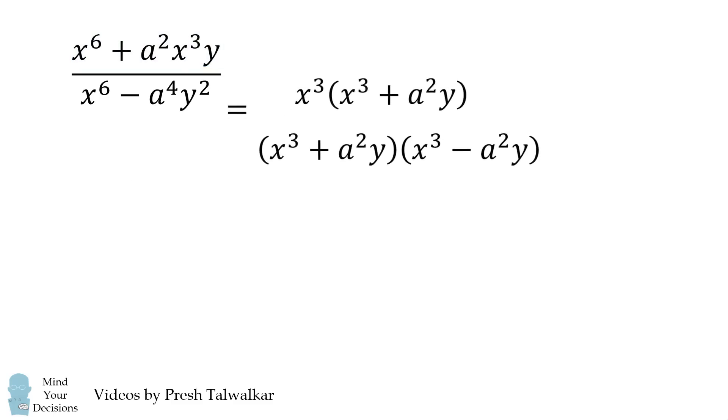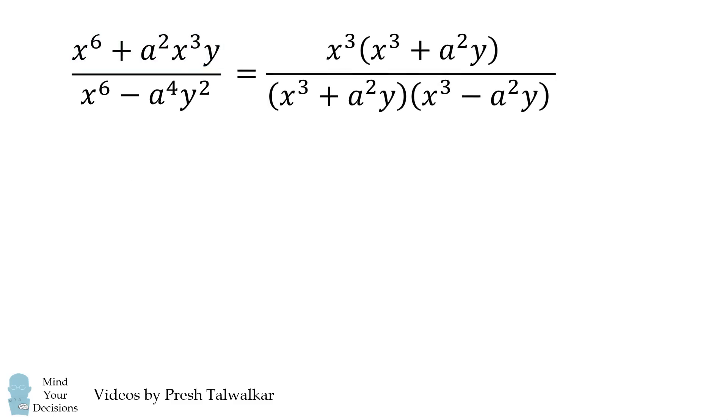We now take the numerator over the denominator. And both have the term x to the power of 3 plus a squared y. So these will cancel out. And we're left with the answer of x cubed all over x cubed minus a squared y.